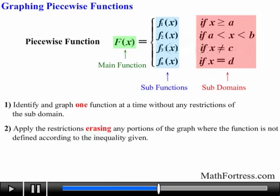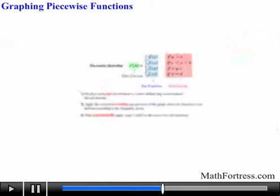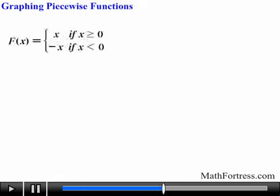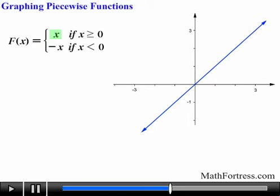Step 2: apply the restrictions, erasing any portion of the graph where the function is not defined according to the inequality given, then systematically apply steps 1 and 2 to the remaining functions. Let's graph the first example: f(x) = x if x ≥ 0, and -x if x < 0. First, graph f(x) = x — an identity function, a line with slope 1 passing through the origin.